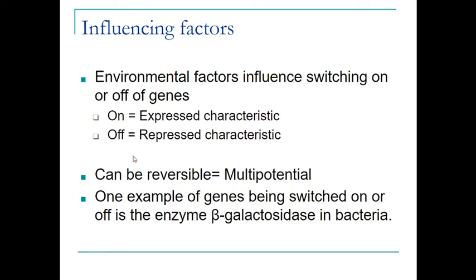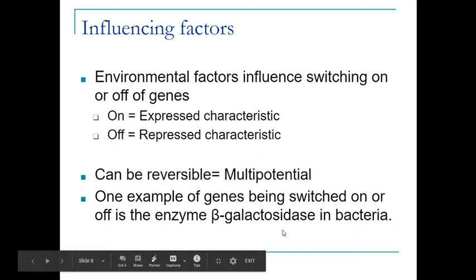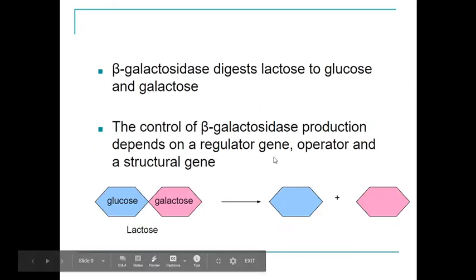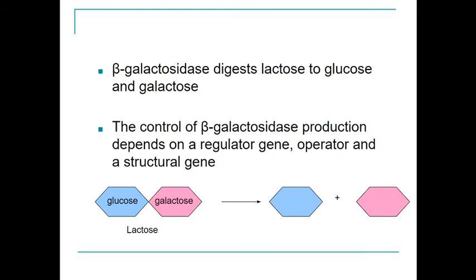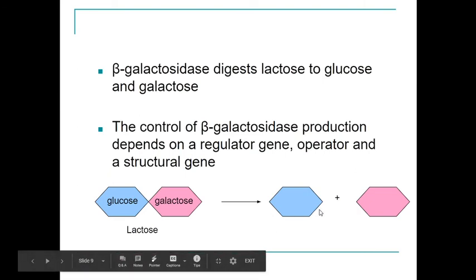One example of genes being switched on or off is the enzyme beta galactosidase in bacteria. We can switch this on or off so that beta galactosidase can be produced. Beta galactosidase is the enzyme that digests lactose and breaks it down into glucose and galactose. Lactose itself is a disaccharide made up of glucose and galactose, and we can break lactose down into its two monomers, glucose and galactose.